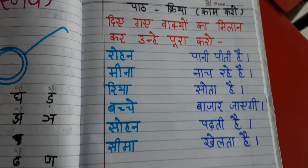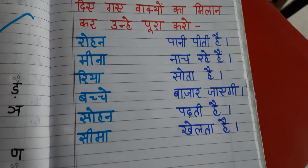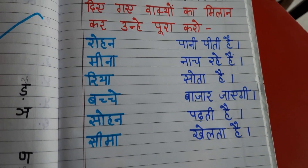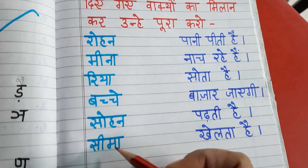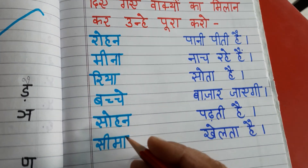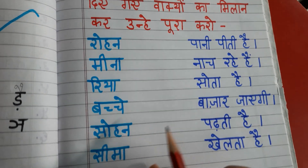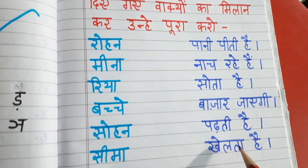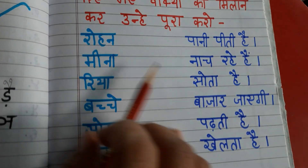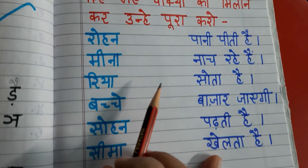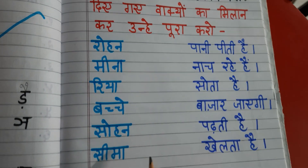Done, class? So अब हमें क्या करनी है? Matching करनी है। इधर क्या दिये हैं? संग्या शब्द दिये हैं। संग्या हमने पढ़ा था ना? व्यक्ती के नाम को बोलते हैं। और इधर क्या दिये हैं? क्रिया दिये हैं, ओके? क्रिया से आपको इन संग्या को match करना है और वाक्य complete हो जाएंगे।